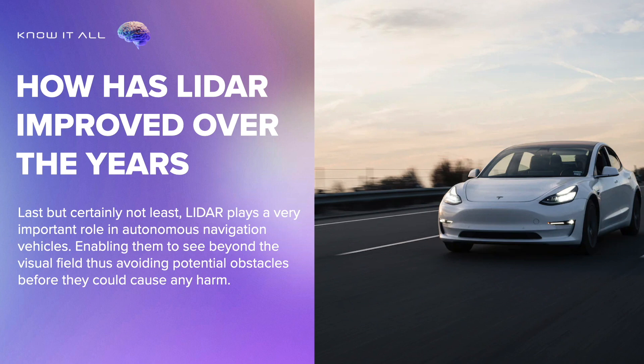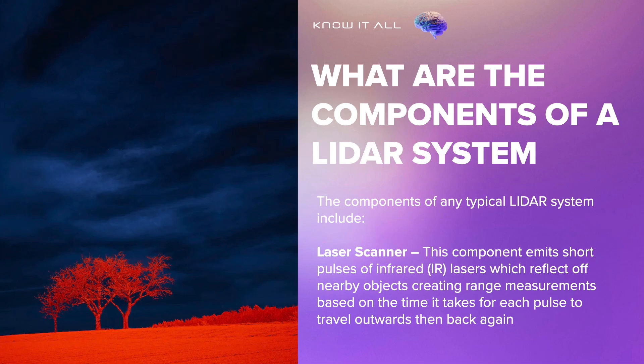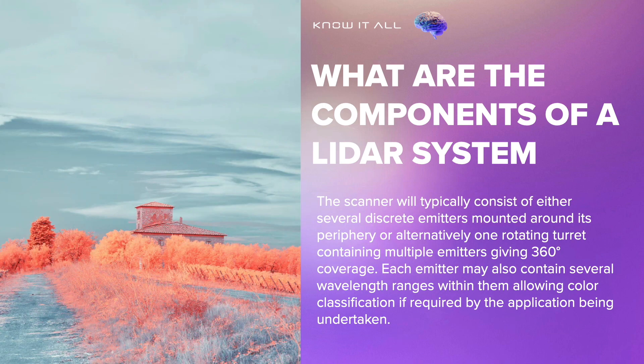The components of any typical LiDAR system include the laser scanner. This component emits short pulses of infrared (IR) lasers which reflect off nearby objects, creating range measurements based on the time it takes for each pulse to travel outward then back again. The scanner will typically consist of either several discrete emitters mounted around its periphery, or alternatively one rotating turret containing multiple emitters giving 360-degree coverage. Each emitter may also contain several wavelength ranges, allowing color classification if required by the application.